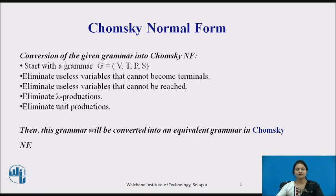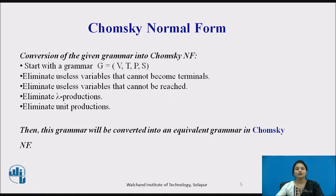When converting a grammar from CFG to CNF, we need to follow some steps. First, start with a grammar G in the form of V, T, P, S — that is non-terminal, terminal, production, and start symbol. Then eliminate useless variables that cannot be reached, eliminate null productions, and eliminate unit productions. After this, we can convert the grammar into Chomsky normal form.